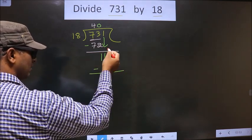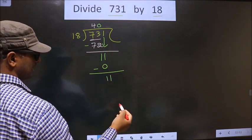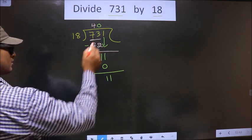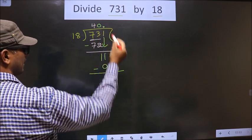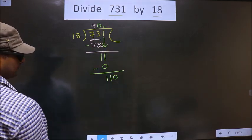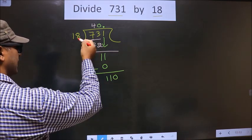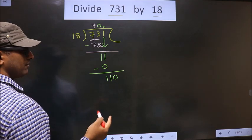Here we did not bring any number down. 11 is smaller than 18, so now you can put a dot and take 0 here. Now, 110—a number close to 110 in the 18 table: 18 times 5 is 90, 18 times 6 is 108.